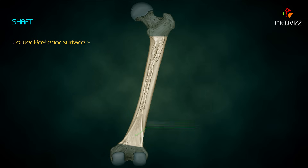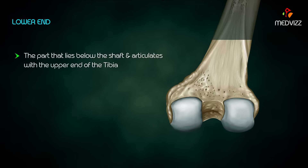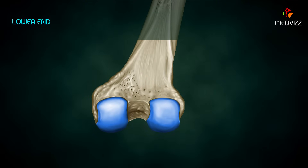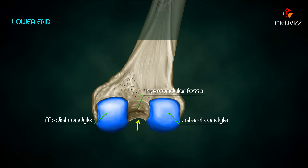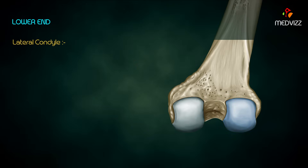The lower posterior surface, also known as the popliteal surface, lies between the medial and lateral supracondylar lines. The lower end lies below the shaft and articulates with the upper end of the tibia. It is broad and expanded to provide a bearing surface for transmission of body weight onto the tibia. It has two prominent masses on each side called medial and lateral condyles, which are separated by a depressed area called the intercondylar fossa.